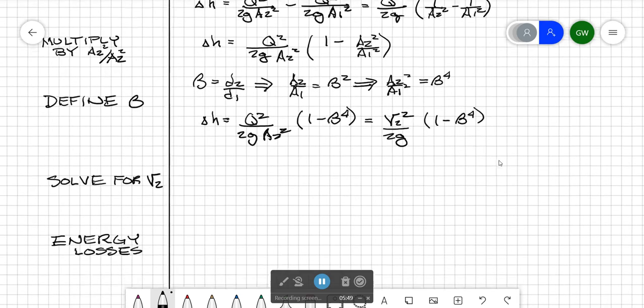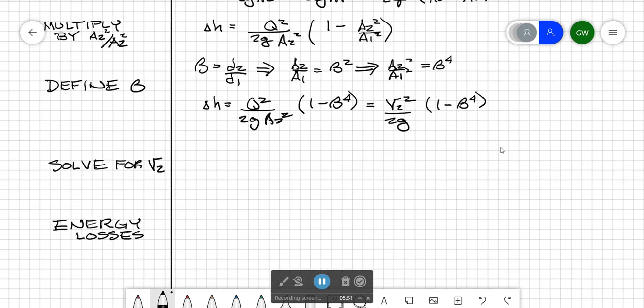Let's now solve for v2, the velocity in the throat. So v2, a little bit of algebra, equals 1 over 1 minus beta to the fourth, and we multiply by the square root of 2g delta h.